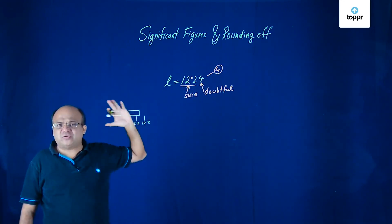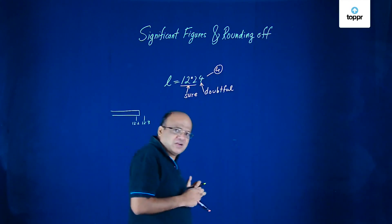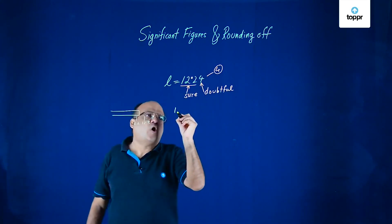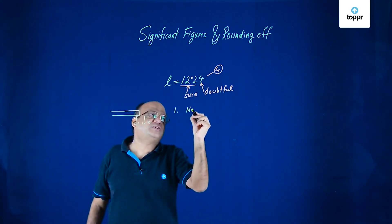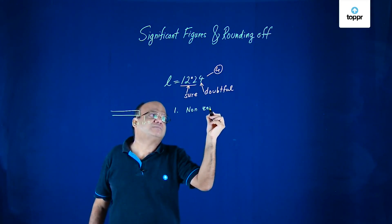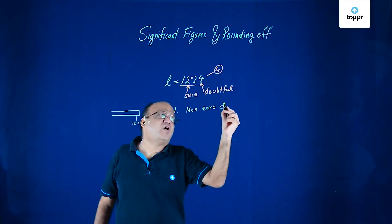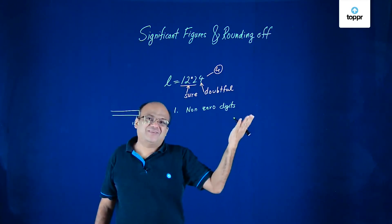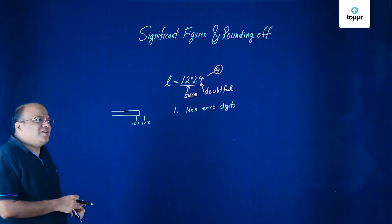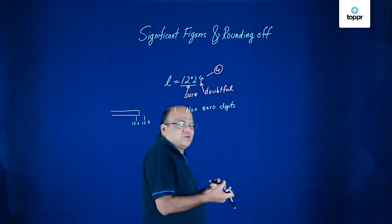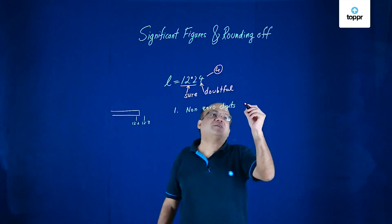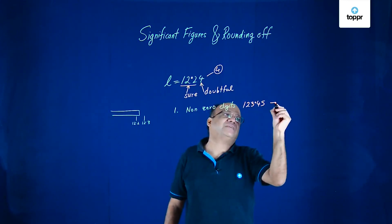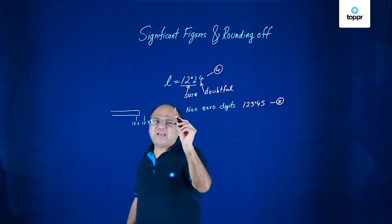There are certain rules which we follow so that everyone has a correct understanding of the number of significant digits. First rule: all non-zero digits are significant. That is very obvious. All non-zero digits will be significant because they have come from some measurement. Suppose the reading is 123.45 — how many significant digits are there? 5.